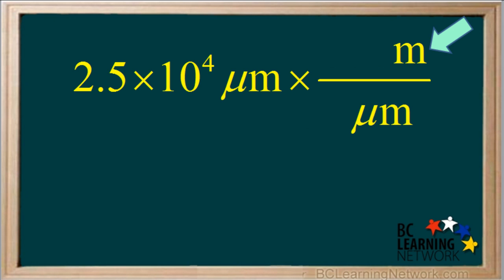The unit we want is meters, so we write m for meters on the top. Using this method, we always write a one beside the unit with the prefix. The prefix is micro here.